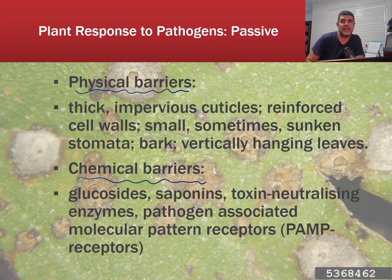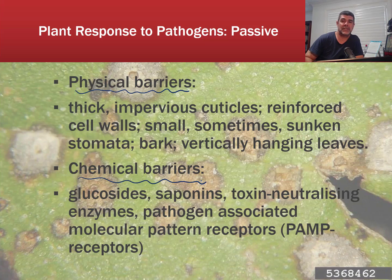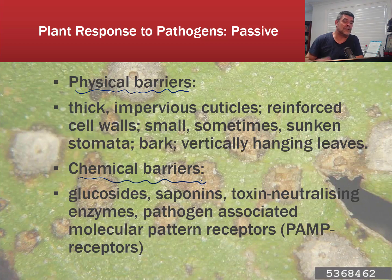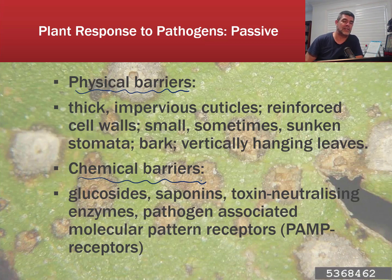The first thing pathogens have to do is specialize in a particular area of the plant. If we think about plants, we're thinking about three primary tissues: leaves, stems or trunks, and roots. There are other seasonal structures in plants, particularly flowers or fruits, but primarily for organisms that want to be living on plants on a regular basis, they're going to need to establish themselves in one of these three main regions.